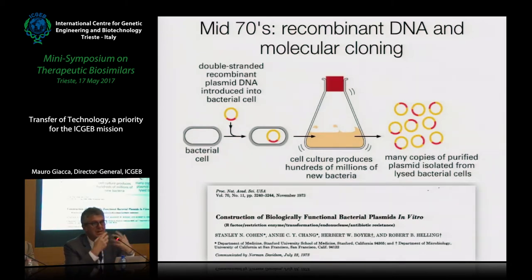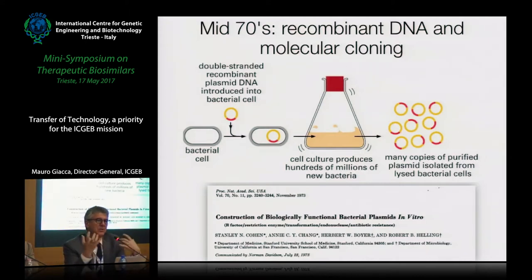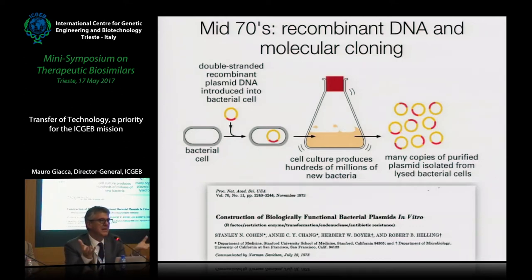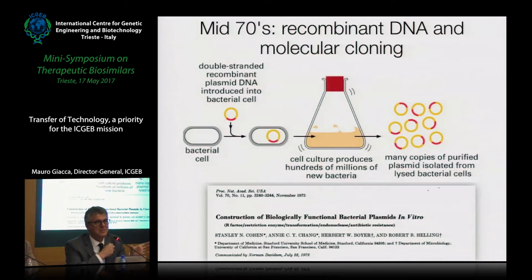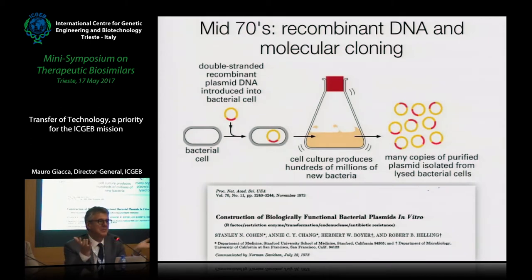In the early 70s, there was also a rush to understand how genetic information is transformed into proteins. It was realized that the genetic code is exactly the same — the way a gene sequence is transformed into a sequence of amino acids to form a protein is the same in plants, in birds, in mammals, and in microorganisms.